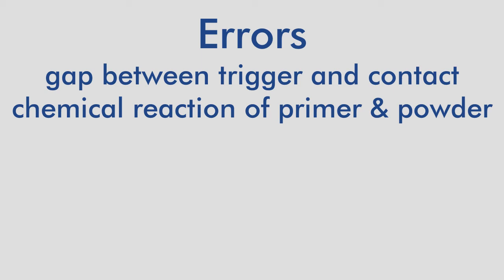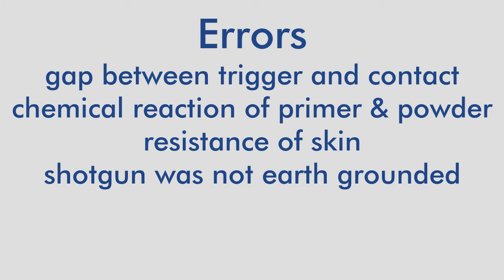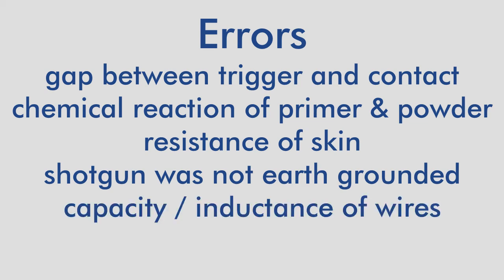There were also electrical errors when I pull the trigger because of the resistance of my skin. The next time I should ground the shotgun in the metal parts of the system. Another error was the capacity or inductance of the wires, but I think as you can see on the scope, the signal was quite good, so I don't think it has much influence on the time I measured.